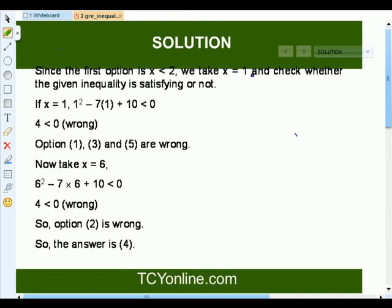Now, for this, first of all, we will take x less than 2. For this, let's take x equals to 1. So, when we take x equals to 1, we get 1 squared minus 7 times 1 plus 10, less than 0. That means 4 should be less than 0. But this is wrong.